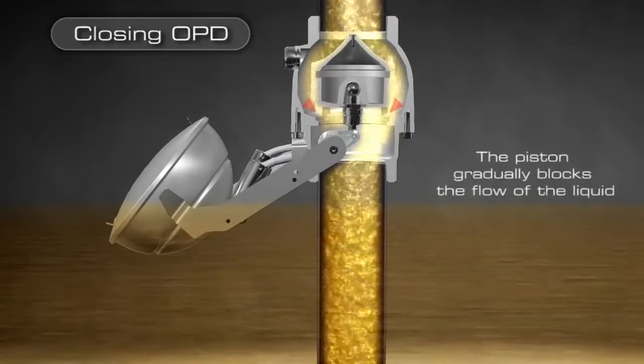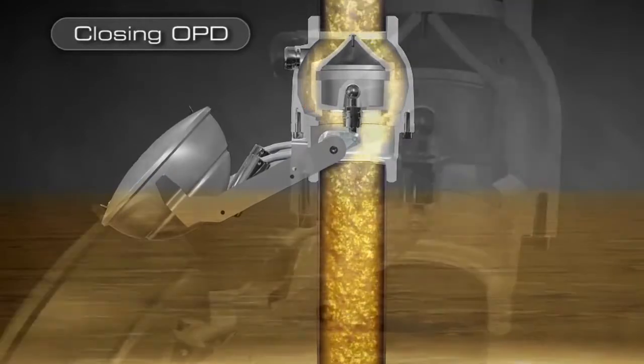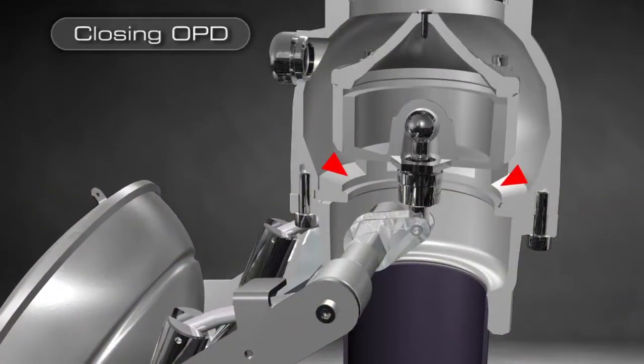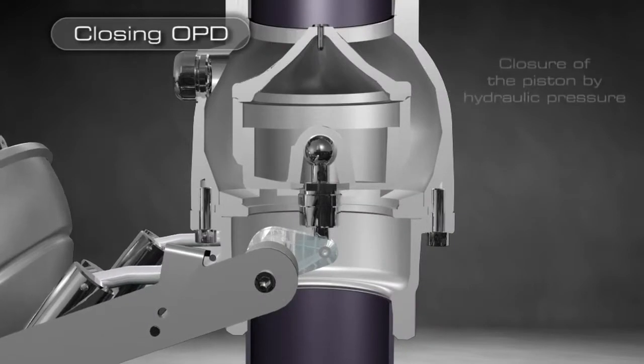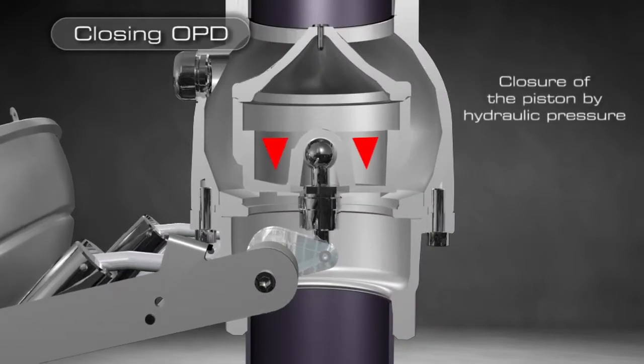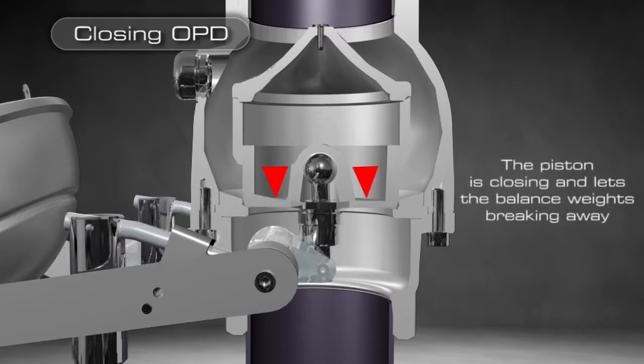As filling is taking place, the piston gradually blocks the flow of the liquid and the hydraulic pressure increases inside the stop valve. The hydraulic pressure lets the balance weights break away from the float spacer and makes the piston close.